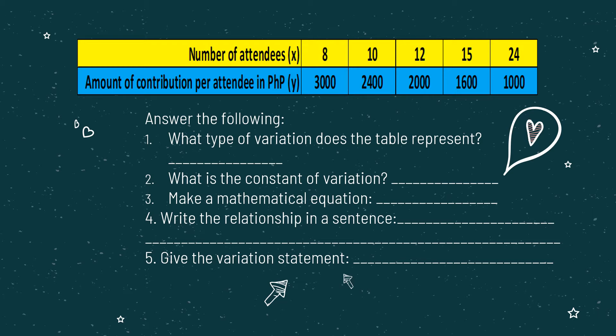and 24. While the amount of contribution per attendee, represented by variable Y, we have 3,000, 2,400, 2,000, 1,600, and 1,000 pesos. As X increases — as the number of attendees increases — the amount of contribution per attendee decreases.